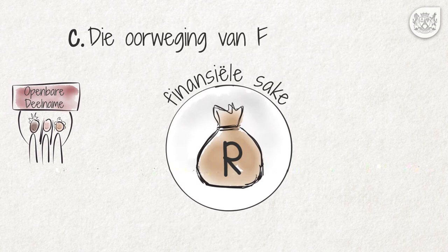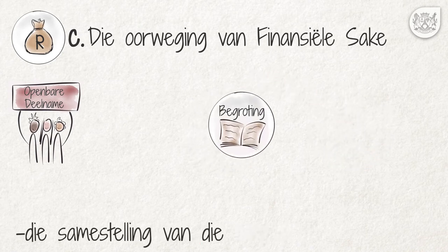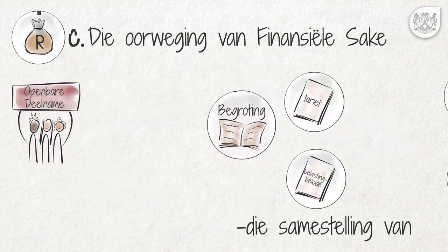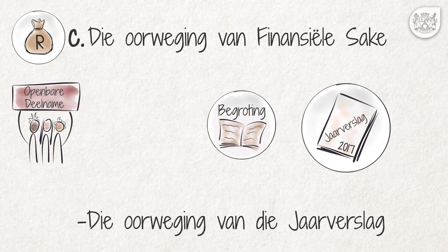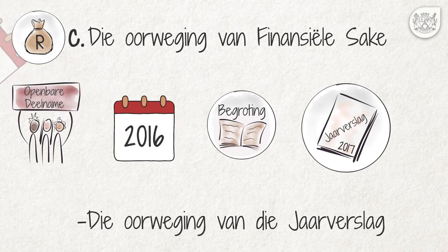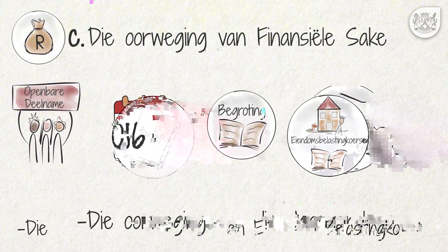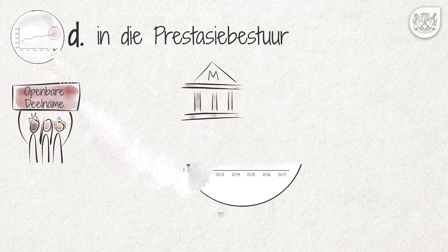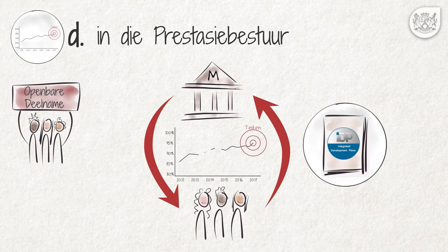C: Die Oorweging van Finansiële Sake. Nasionale Finansiële Wetgewing vereis ook dat daar openbare deelname ten opsigte van die volgende sake moet wees: Die opstel van die begroting met inbegrip van tarief- en belastingbeleide, die kredietbeheer en skuld- en vorderingsbeleid en die leningsbeleid. Die sluiting van kontrakte en openbare of privaat vennootskappe. Die oorweging van die jaarverslag wat 'n magdom inligting oor die munisipaliteit se aktiwiteite van die voorafgaande jaar bevat. En die vasstelling van tariewe en eiendomsbelastingkoerse wat die munisipaliteit op dienste en eiendomme hef. D: Prestatiebestuur. Ten slotte moet elke munisipaliteit die gemeenskap by die ontwikkeling, implementering en hersiening van sy prestatiebestuurstelsel betrek, sodat die GOP suksesvol uitgevoer kan word.